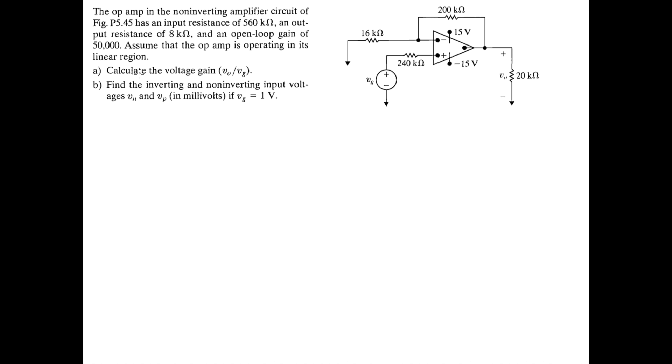First we're going to do part A and calculate the voltage gain, so it's V0 or V0, which is right here, over Vg, which is our incoming voltage source. And in part B we're going to find the inverting and non-inverting input voltages Vn and Vp in millivolts if Vg is equal to 1 volt, so if this voltage source is equal to 1 volt.